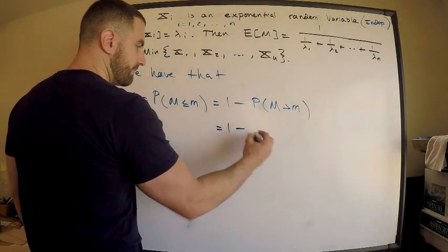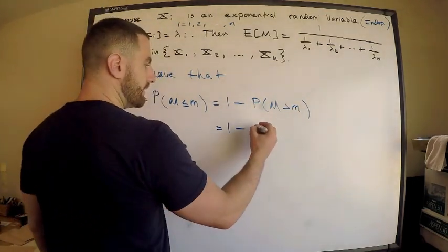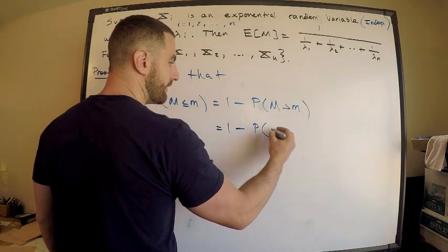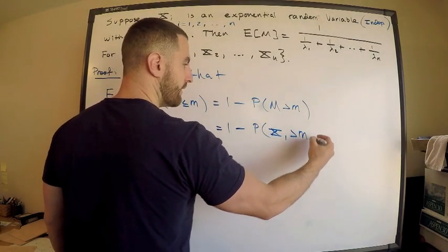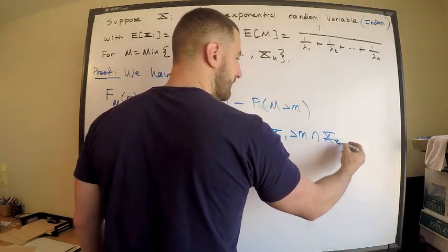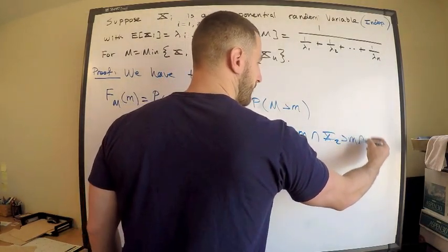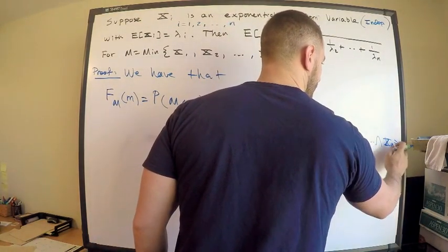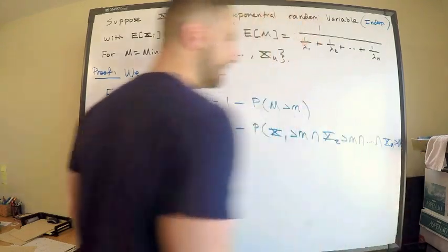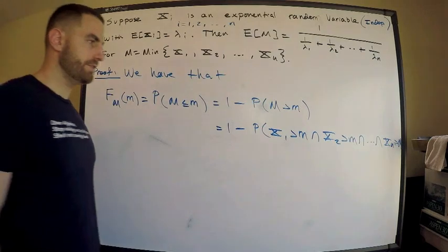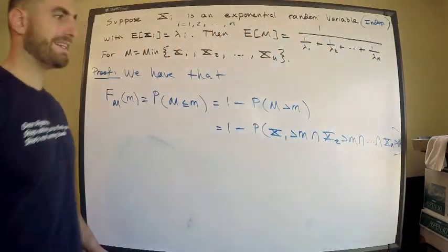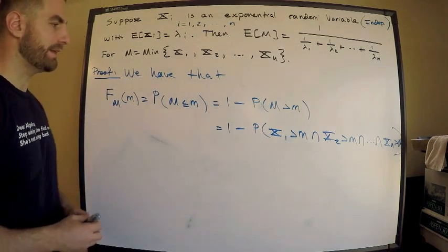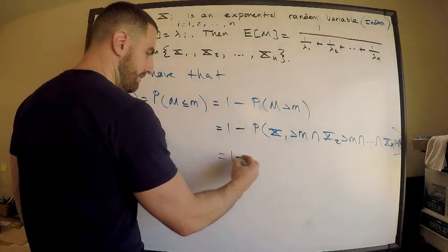Excellent. So this tells me that this is 1 minus the probability that every single one is greater than m. So probability that X_1 is greater than m and X_2 is greater than m, all the way to X_n greater than m.